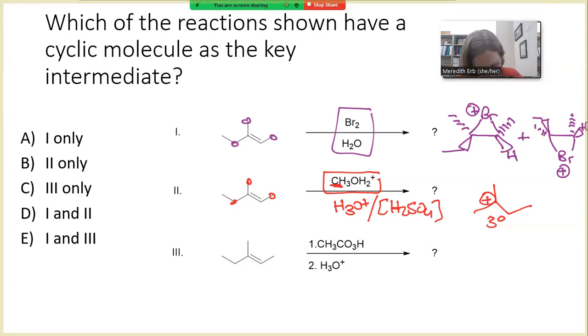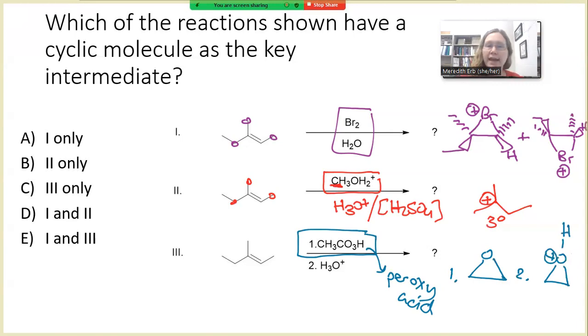Okay. Reaction number three is our reaction that involves a peroxy acid. Whenever you see a CO3, that's the kind of hallmark of a peroxy acid. And so that is going to favor epoxide formation. The epoxide is formed in reaction number one, and then in reaction number two, it becomes protonated by the acid to make kind of our key intermediate.